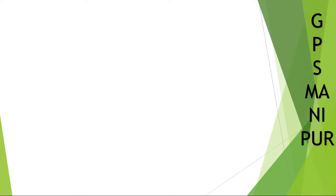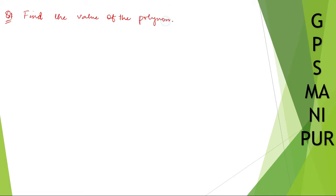We are starting with Exercise 2.2, Class 9 Math — Polynomials. Question number one: find the value of the polynomial 3x² minus 5x plus 4.